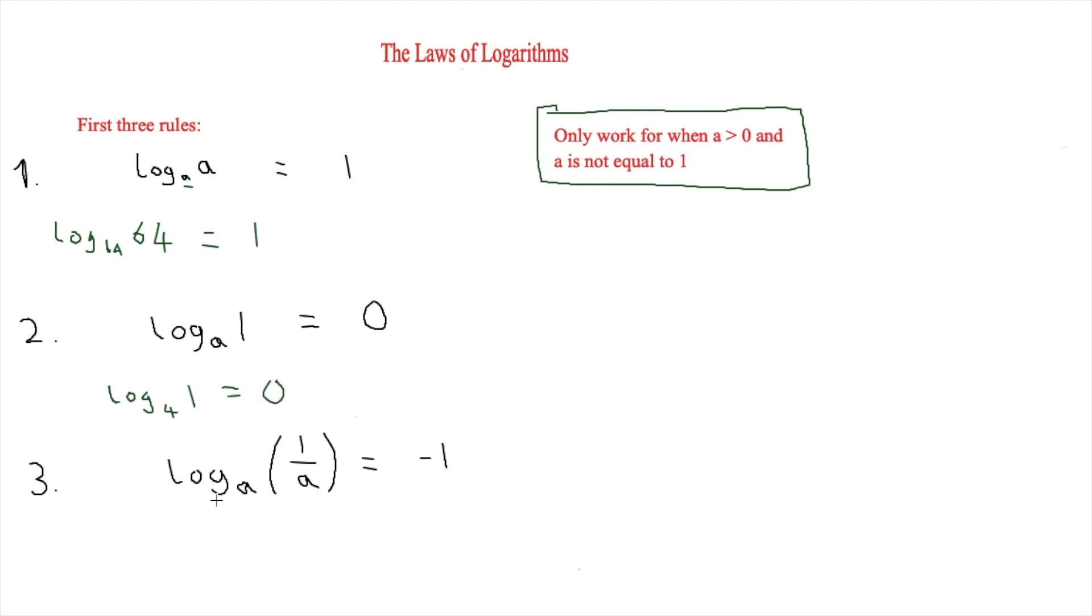And the final one says log base a of one over a is equal to minus one. We'll use five as a, so log base five of one fifth—feel free to put any numbers in on your calculator to check all of these work—and that would be equal to minus one. So these are the first three rules that you simply have to learn.